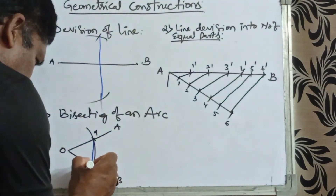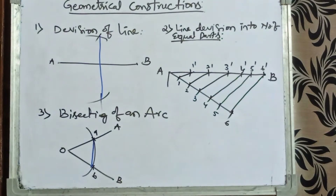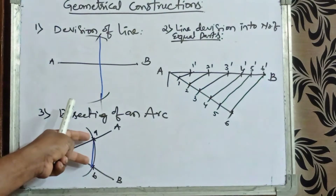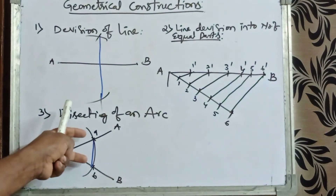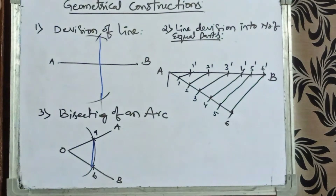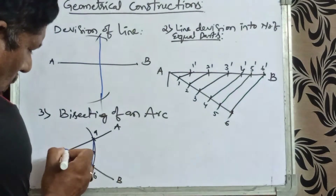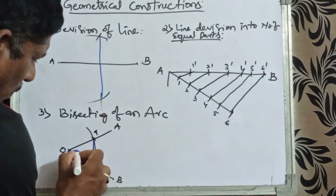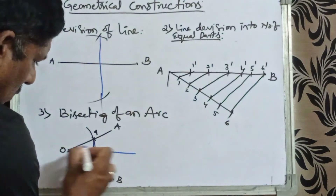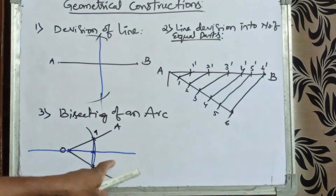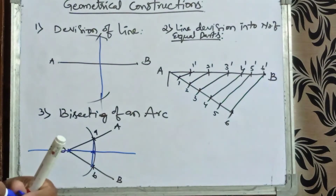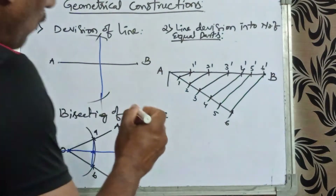Measure the length of the line from small a to small b and mark the center point. Join this center point to O and extend the line. So easily we can bisect the arc into two equal halves. That is bisecting of an arc.